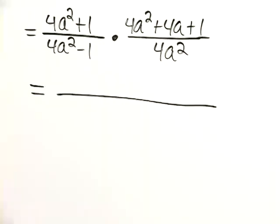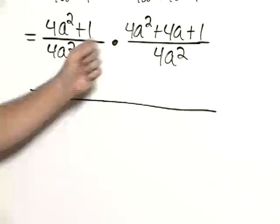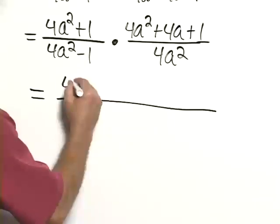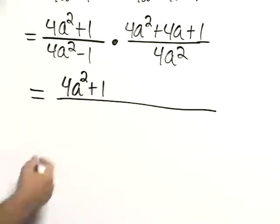you factor the numerators and you factor the denominators and you look for the removal of factors of 1. 4a squared plus 1 does not factor, and so we leave it as 4a squared plus 1.